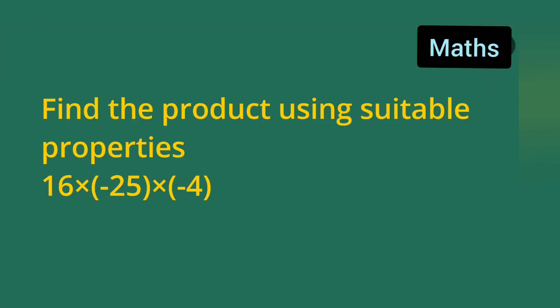In today's mathematics class, today's question is find the product using suitable properties: 16 multiplied by minus 25 multiplied by minus 4. This question I have taken from class 6th and 7th.